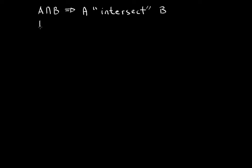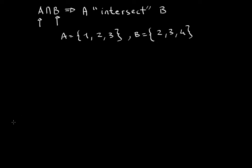A intersect B is the set containing all elements in A which are also in B. So let's say you have set A = {1, 2, 3} and set B = {2, 3, 4}. If someone asks you what A intersect B is, what I do — it makes my life easier — is underline the elements present in both sets. 1 is clearly not in both sets. 2 is present in both. 3 is present in both. 1 and 4 are not, so we wouldn't underline them.